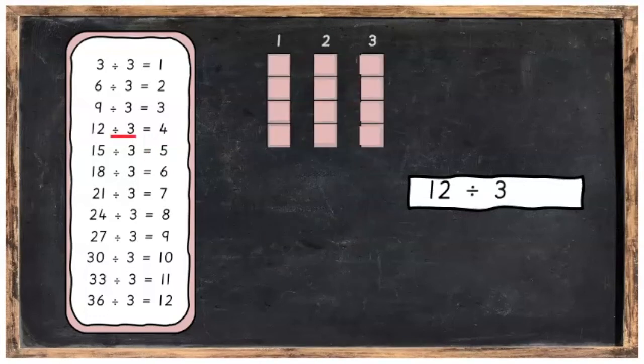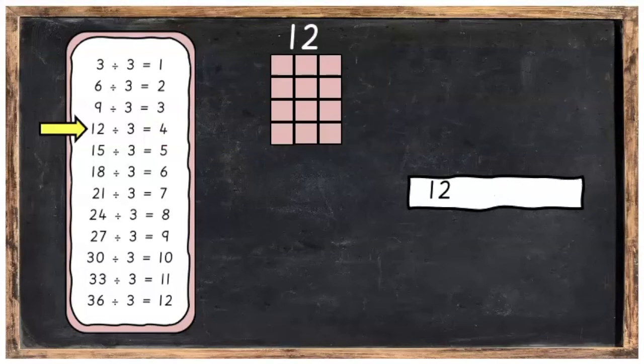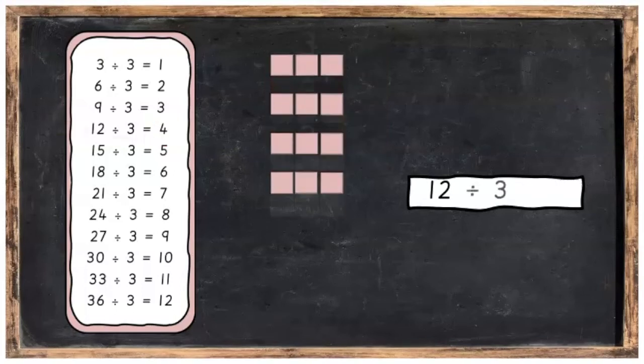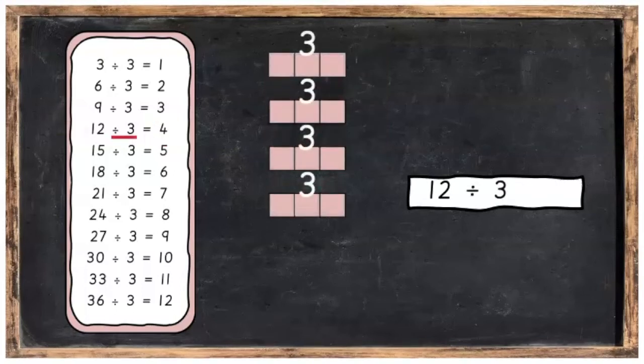12 divided into 3 equal parts, you're going to get 4 in each part. Or 12 divided into 3's, you're going to get 4 groups of 3.